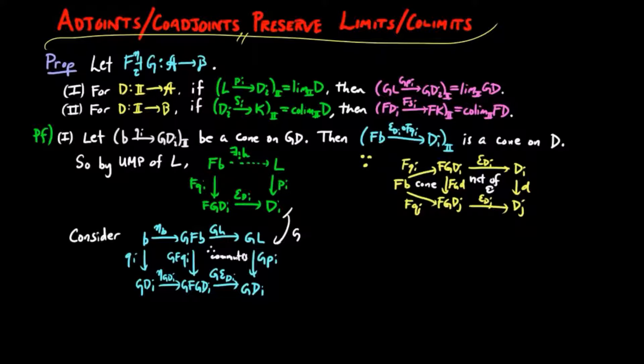Therefore Gπi∘Gh∘ηB is equal to Gεdi∘ηGDi∘qi for each i. But by the triangle identity, GεDi∘ηGDi is equal to the identity on GDi. So this becomes just qi, and this holds for each i.